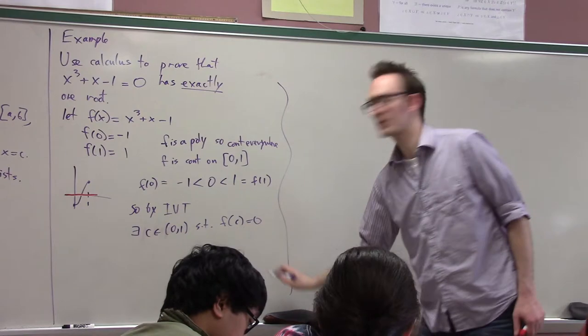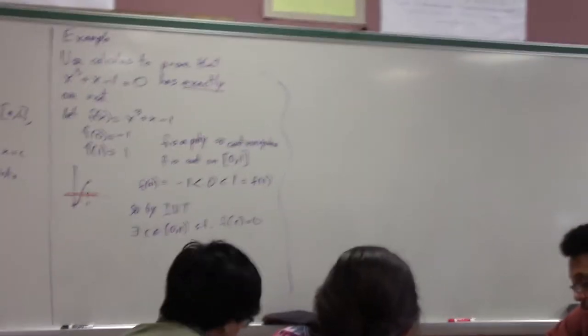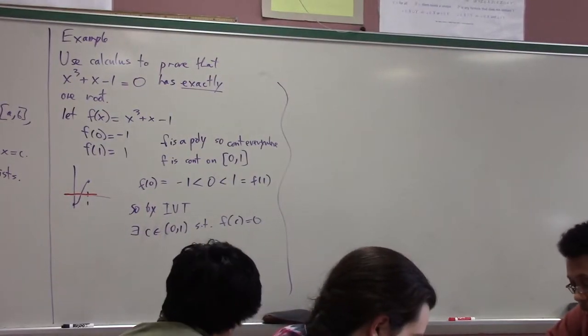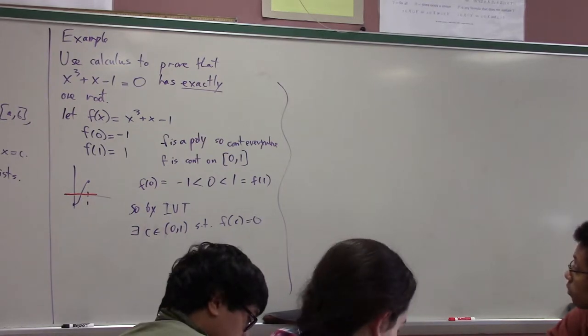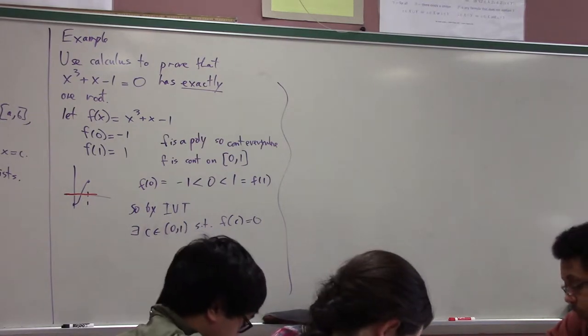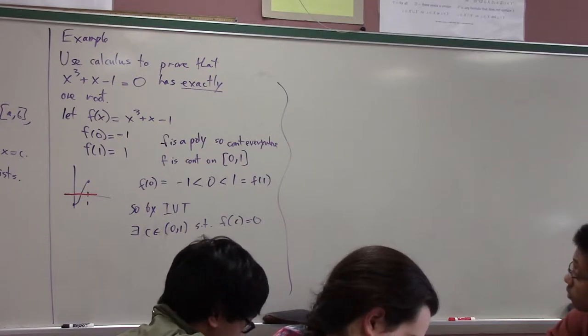Zero, and then so by the intermediate value theorem, there exists a point C on the interval zero, one, such that F of C is zero. Okay, so that had nothing to do with really what we were doing yesterday and today. That just shows that there is a root. Everybody agree? All right, now that I have showed that there is a root, how do I show that there is exactly one?